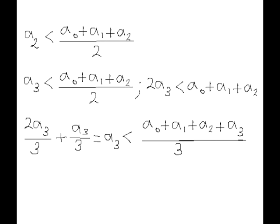But then, from this requirement, it follows that a3 must be less than a0 plus a1 plus a2 divided by 2. Otherwise, n equals 2 satisfies both inequalities. And if we multiply both sides of this last inequality by 2, we can easily prove that a3 must be less than a0 plus a1 plus a2 plus a3 divided by 3.